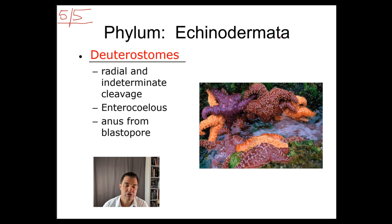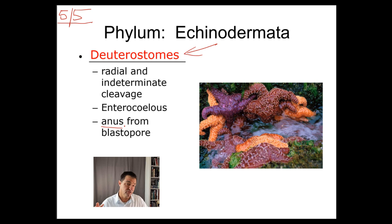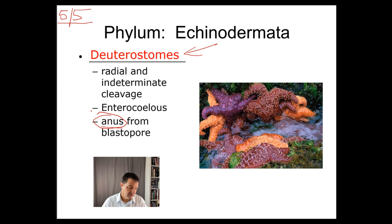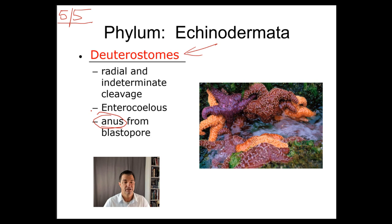Phylum Echinodermata — first and foremost, they are our first group we've seen in doing this that are deuterostomes, which means the blastopore becomes the anus. Remember when we did development and talked about the gastrula and the first hole that an animal has on its body — because echinoderms and us humans are deuterostomes, that first hole becomes the anus. With annelids and arthropods before that, they're protostomes, so that first opening — the blastopore — became the mouth. So this is reversed.